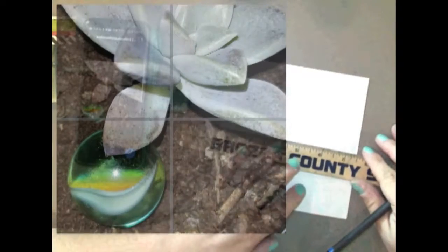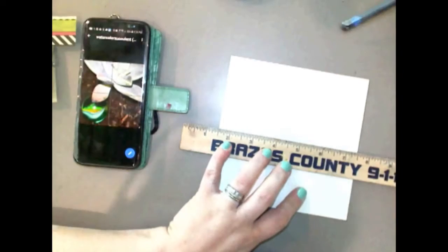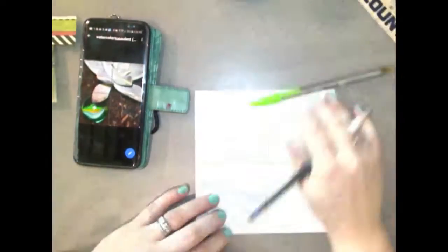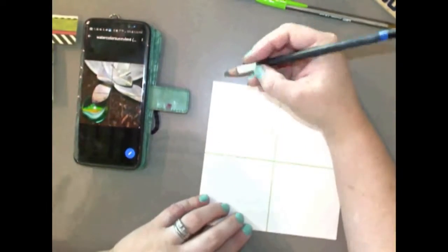To begin my sketch, I'm going to think of my image as well as my paper as four quadrants, similar to gridding. This makes it easier to get proportions correct.